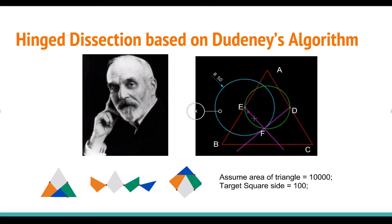Now I'm going to talk about hinge dissection based on Dudeney's algorithm. Dudeney proposed that you can cut triangles with one point connected. How do you do that? Let's assume we have a triangle ABC with area, of course, 10,000.